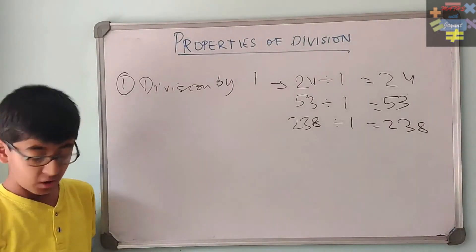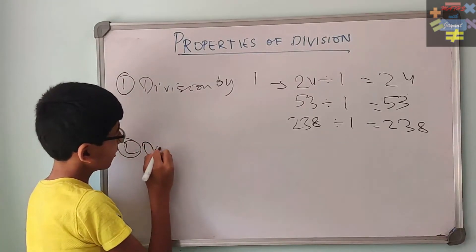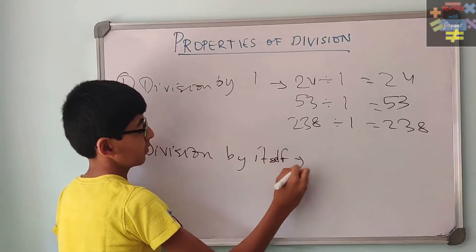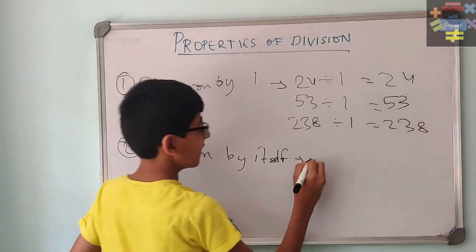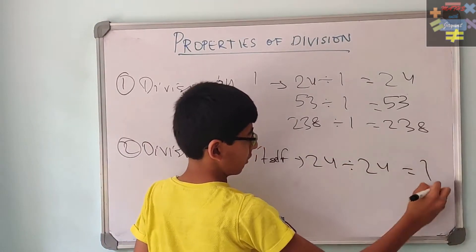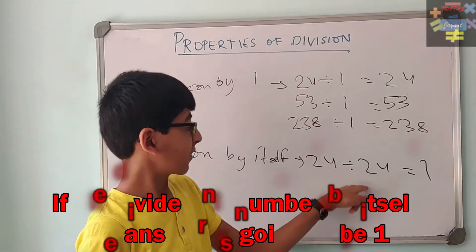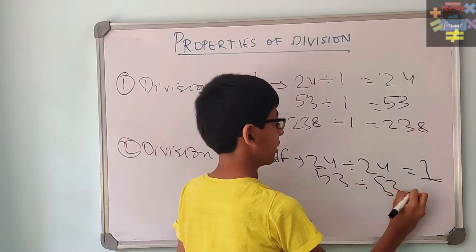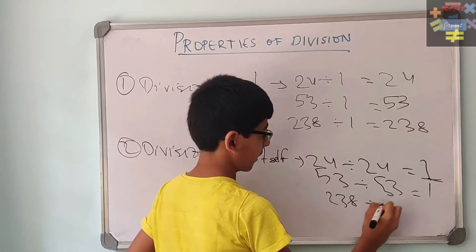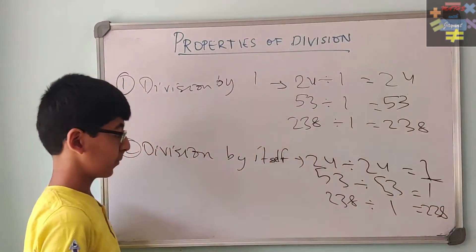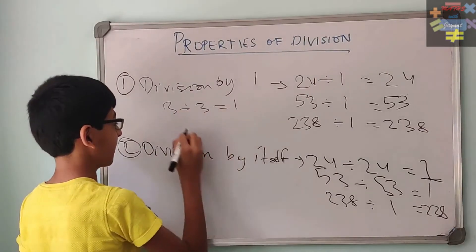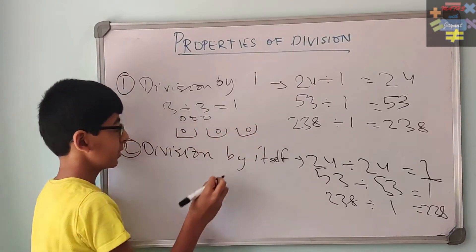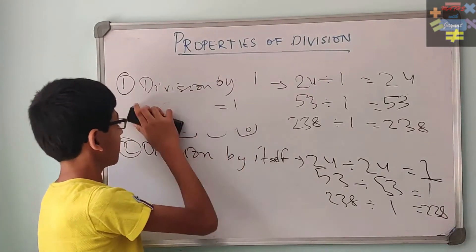Now let us learn the second property: division of a number by itself. 24 divided by 24 is going to give us 1. So if we divide any number by itself, our answer is going to be 1, no matter how big the number is. 53 divided by 53 also gives us 1. Let us understand why. If we take 3 divided by 3, we have 3 items and 3 groups, so we put 1 in each group to make the items equal.